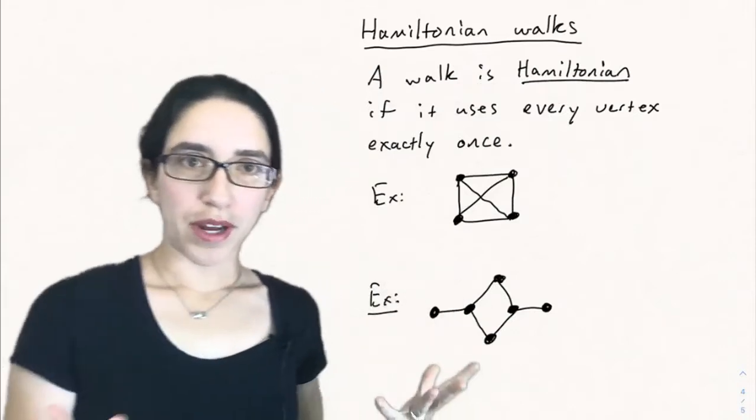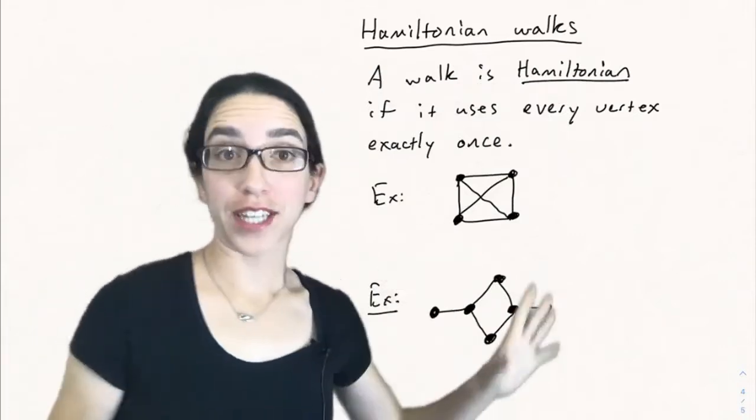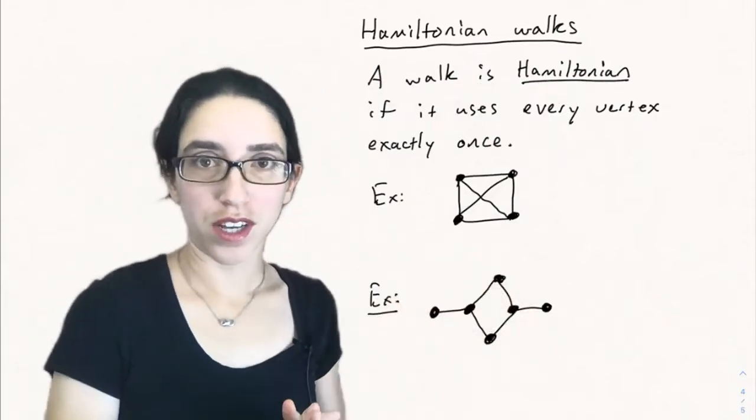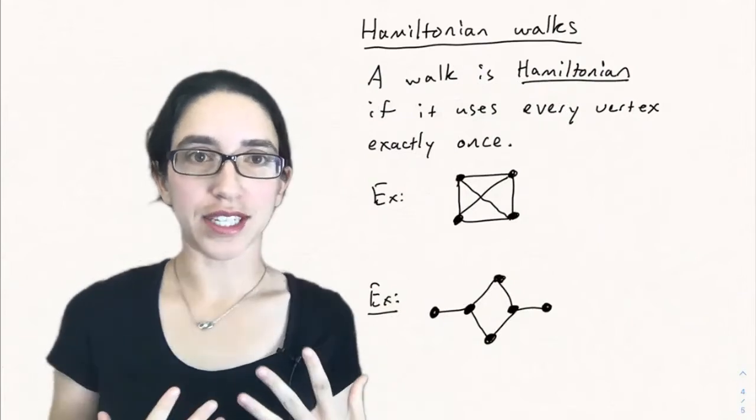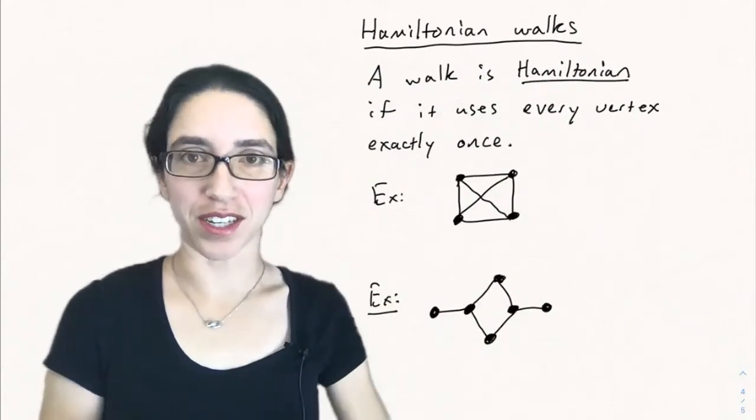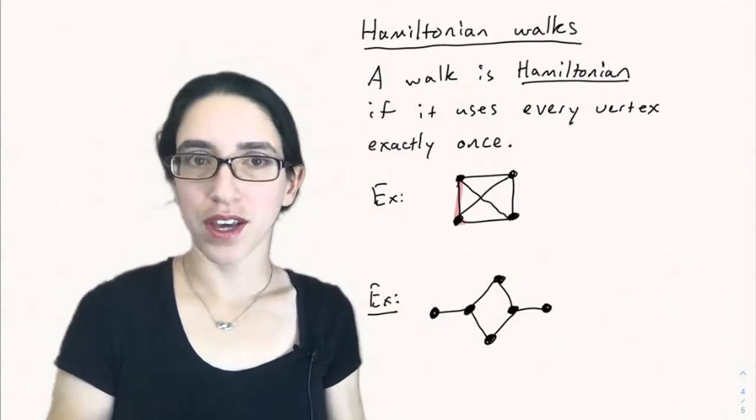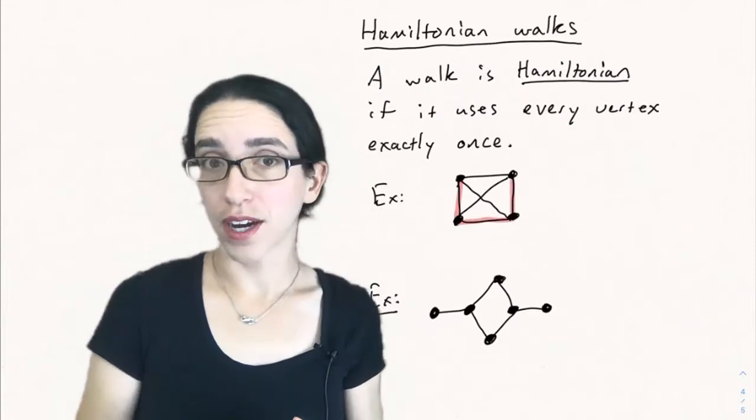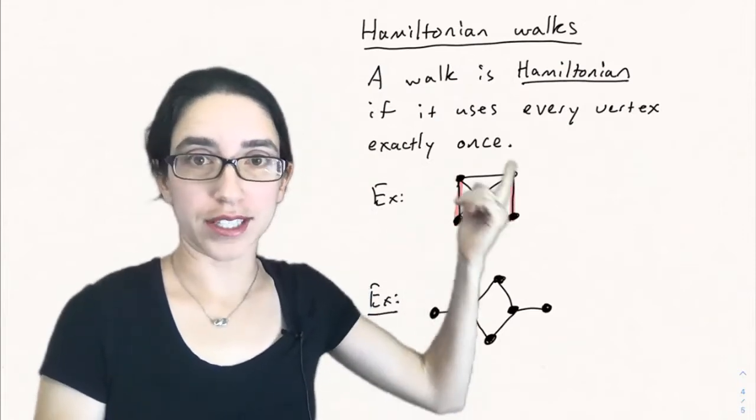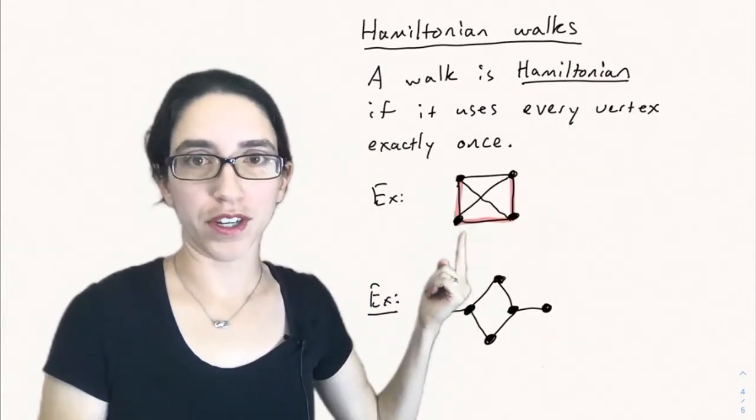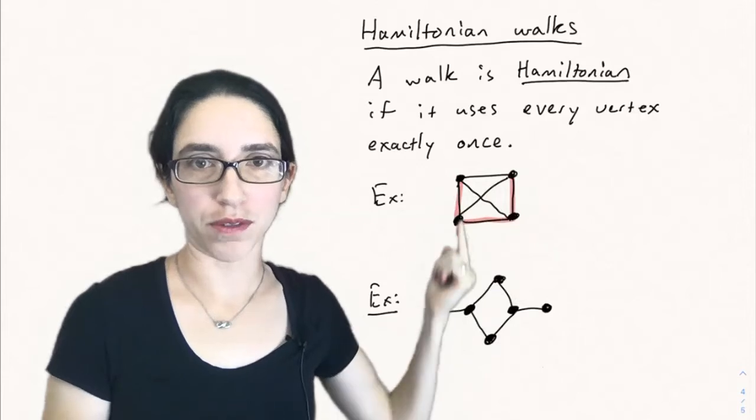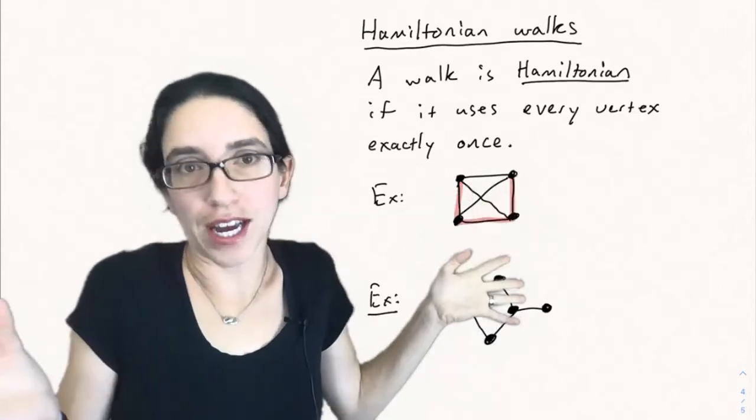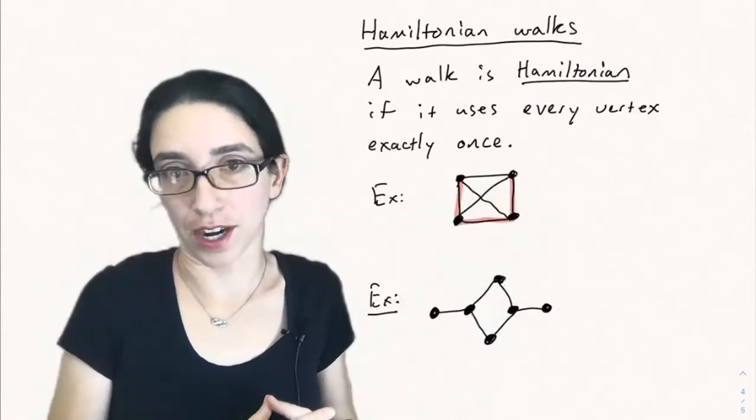So now let's talk about Hamiltonian walks, which is the vertex analog of Eulerian walks. A walk is Hamiltonian if it uses every vertex exactly once instead of using every edge exactly once. Now, in some cases, they're easier to find than Eulerian walks. For instance, k4 had no Eulerian walk, but there's a Hamiltonian walk. We went through every vertex exactly once, not every edge, but we don't care about that for Hamiltonian walks.